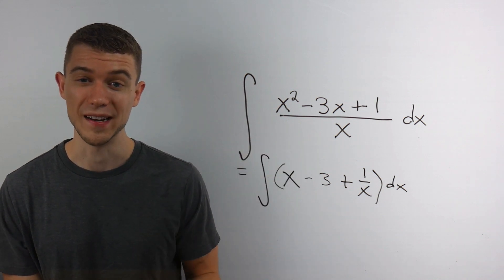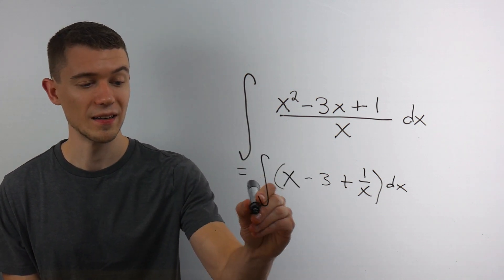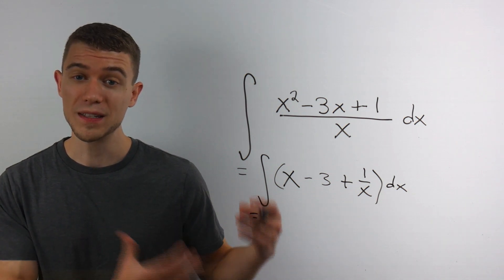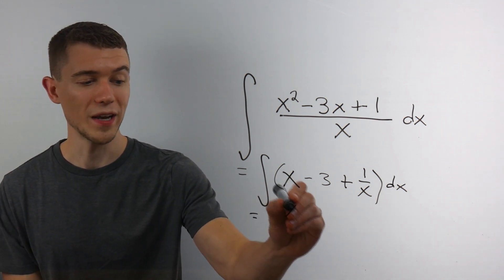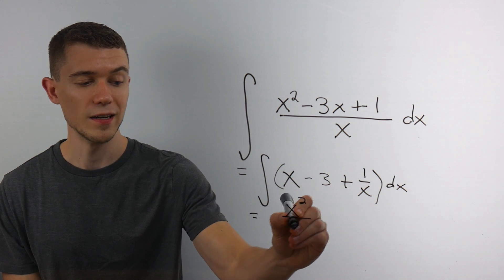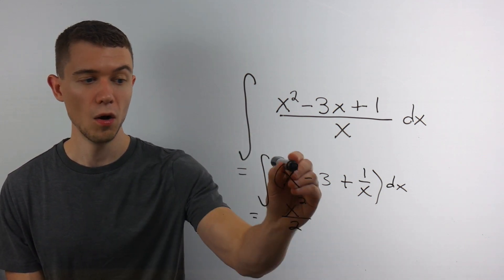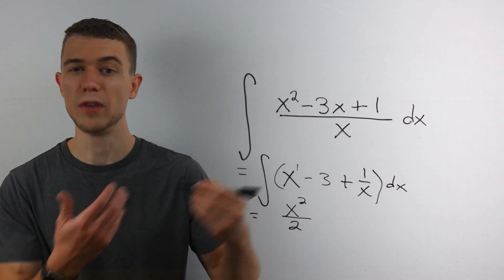Now we can just do the anti-derivative of each of these things. What's the anti-derivative of x? Well, it's just the opposite of the power rule. So what we do is add 1 to the exponent and divide by the new exponent. There's an invisible 1 here, so 1 plus 1 is 2, and we divide by that 2.